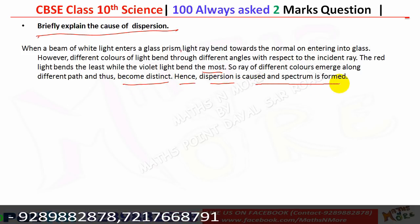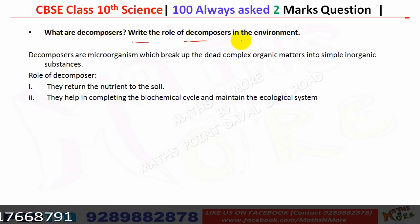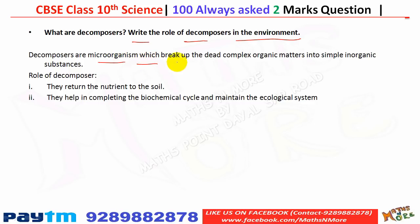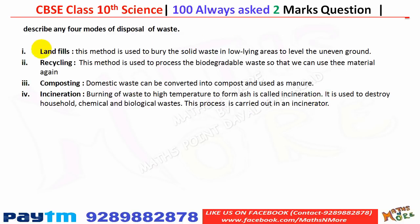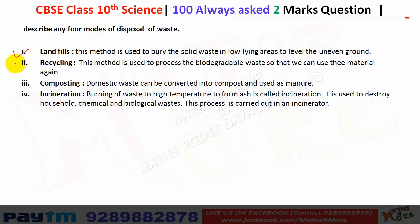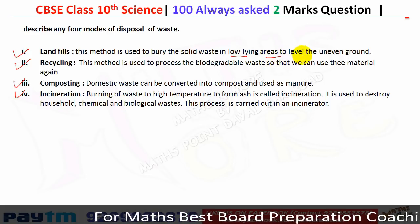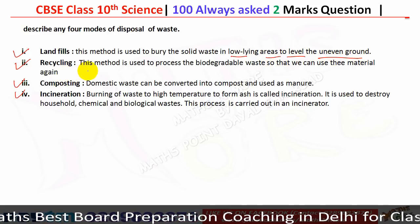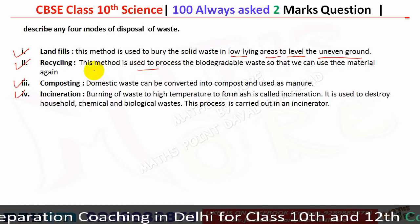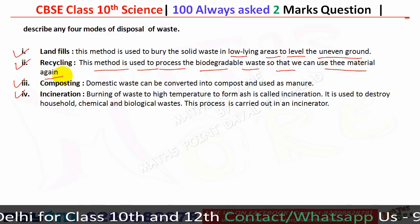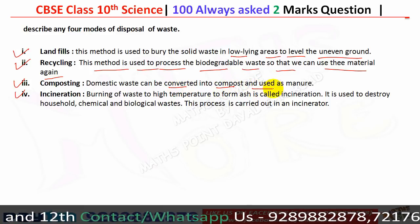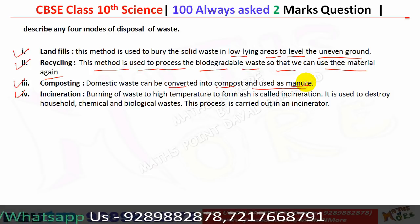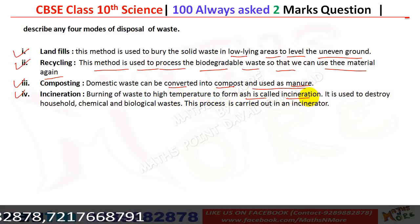Decomposers are microorganisms that break down dead complex organic matter into simple inorganic substances. Their roles: they return nutrients to the soil and help complete the biochemical cycle, maintaining the ecological system. Four methods of waste disposal: landfilling — burying solid waste in low-lying areas; recycling — processing waste material for reuse; composting — converting biodegradable domestic waste into manure; and incineration — burning waste at high temperature to form ash, used to destroy household chemical and biological wastes.